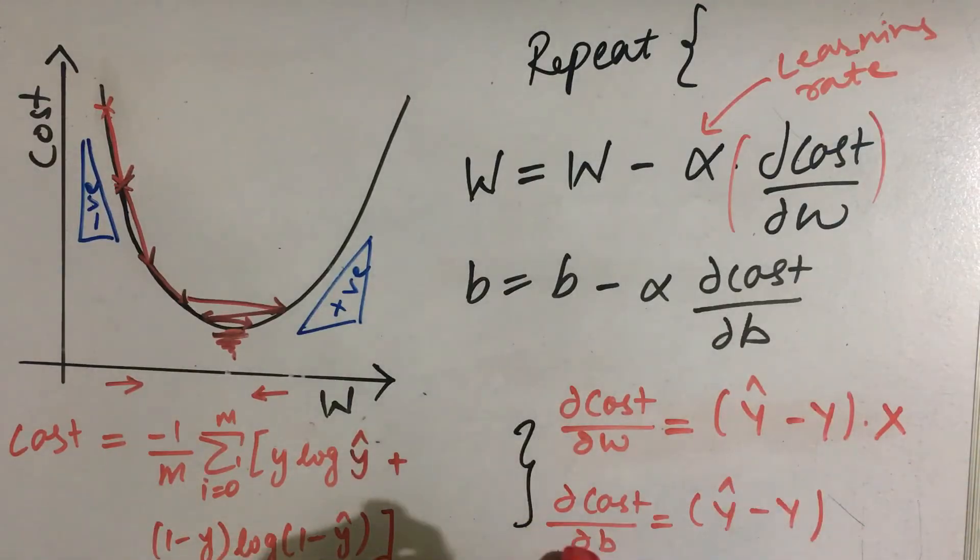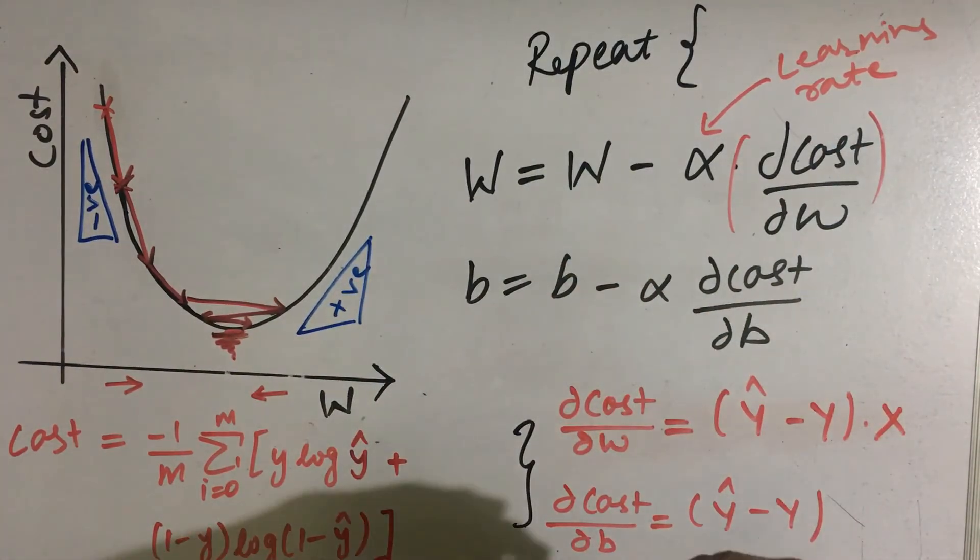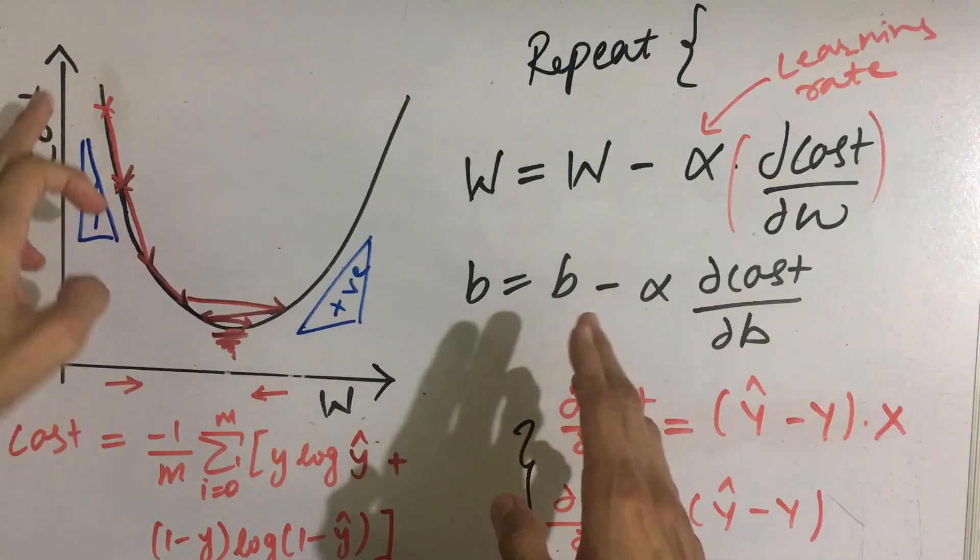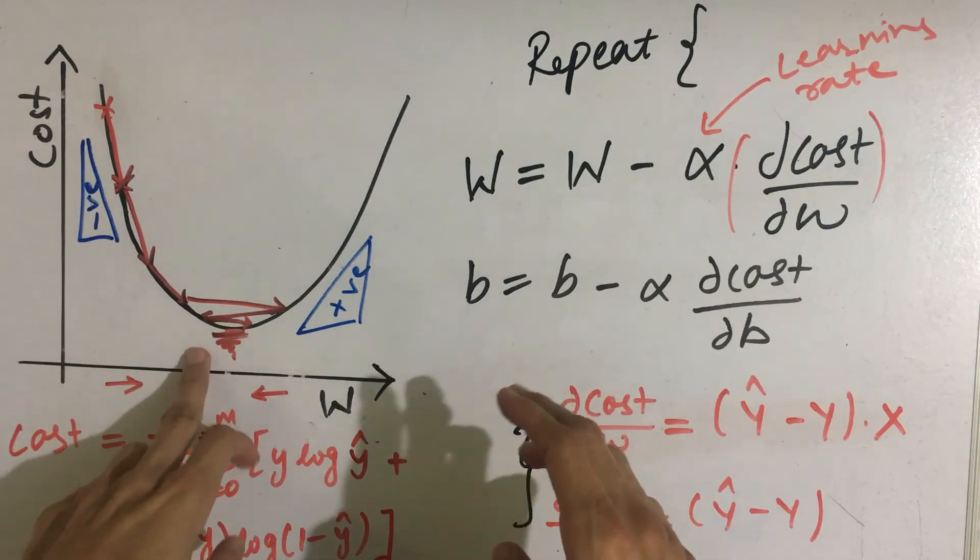So all of that help will be provided in our next video. So this was our logistic regression gradient descent algorithm where we update our w and b parameter in such a way that our cost function converges to its minimum.